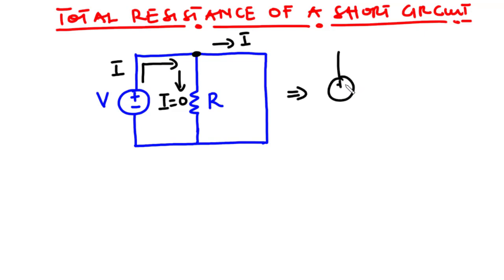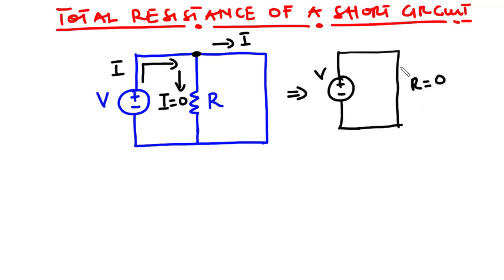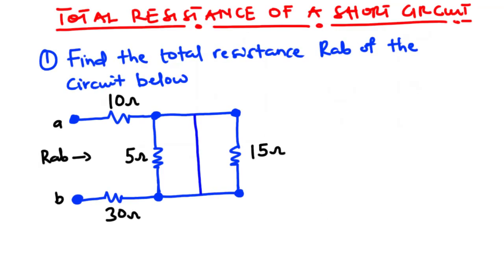When a resistor is short-circuited, the circuit can be reduced so that the voltage source is directly connected to itself by the thin wire. Since the thin wire has zero electrical resistance, a very high current approaching infinity flows through the circuit. This high current may heat up the wire, causing explosion or fire. This tells us that short circuits are generally not desired. With this in mind, let's solve some examples to find the total resistance of circuits with one or more resistors being short-circuited.